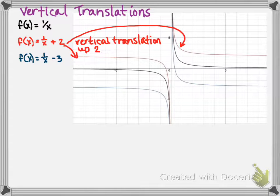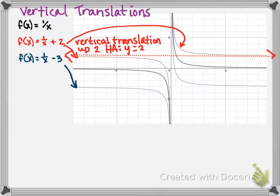Not only does it translate up 2, but its horizontal asymptote translates up 2. So the horizontal asymptote for this function is y equals 2.